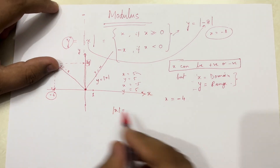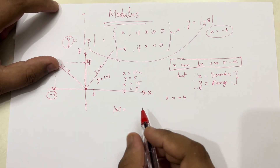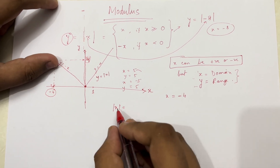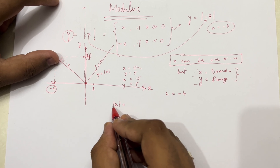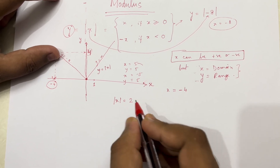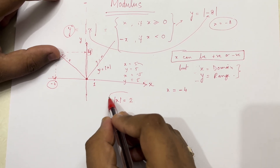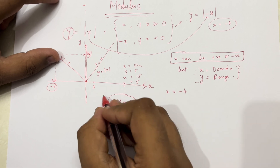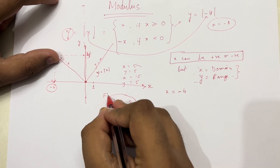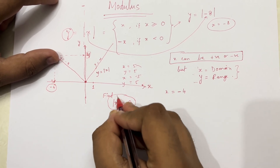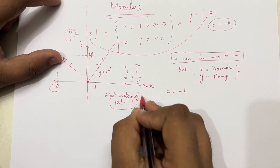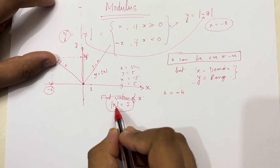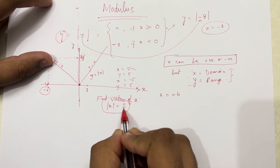Here is a simple example to understand how we can solve equations. Say somebody gives you mod x equals 2 and asks you to find the value of x. So the question is: find the value of x from mod x equals 2.